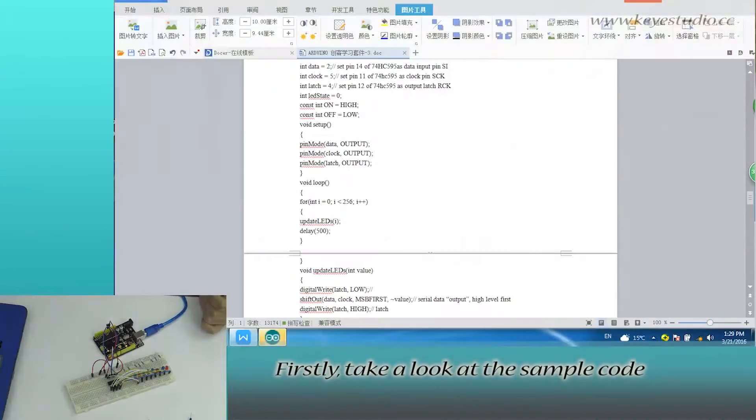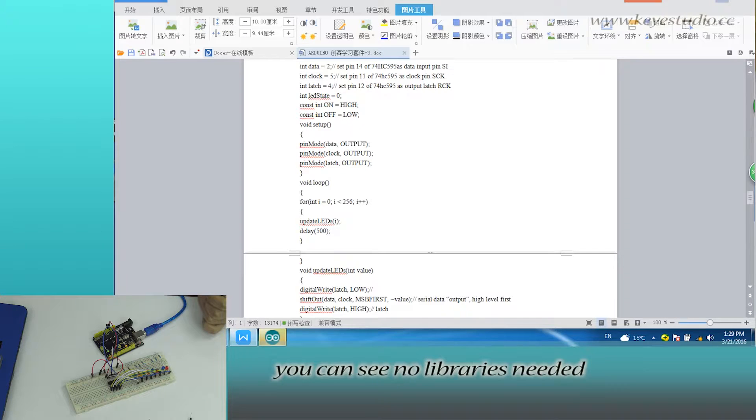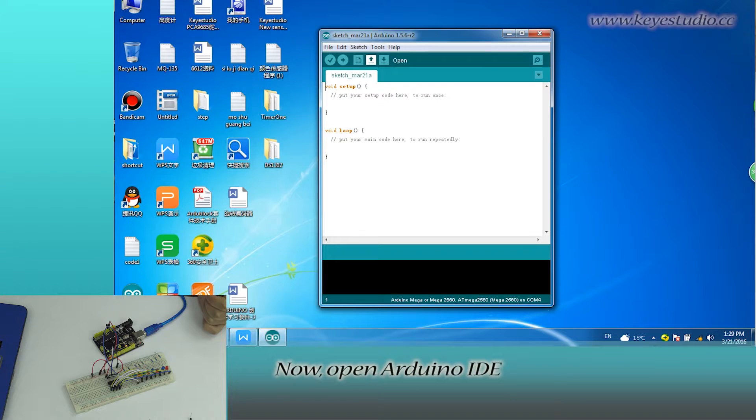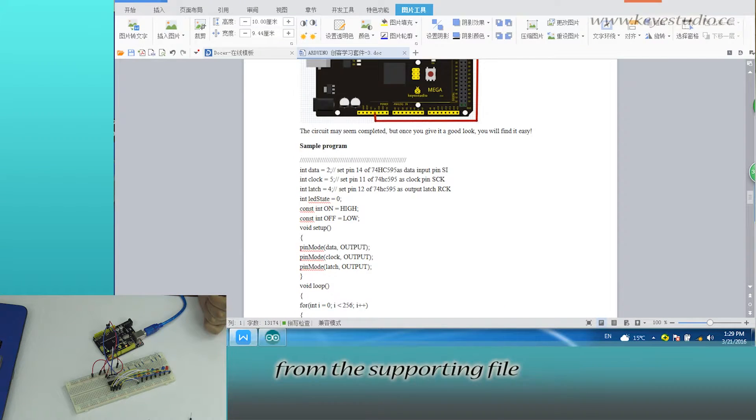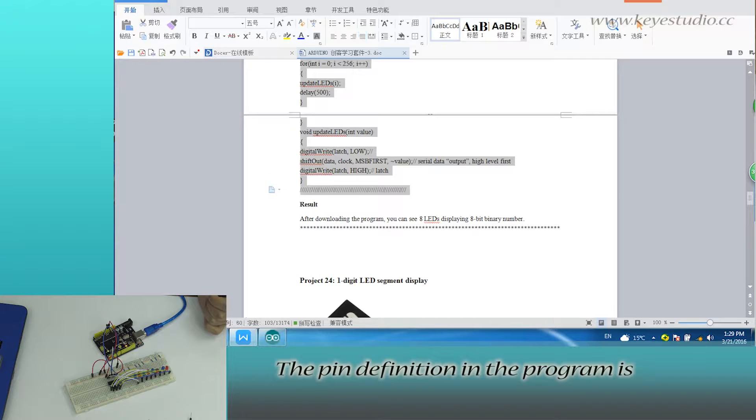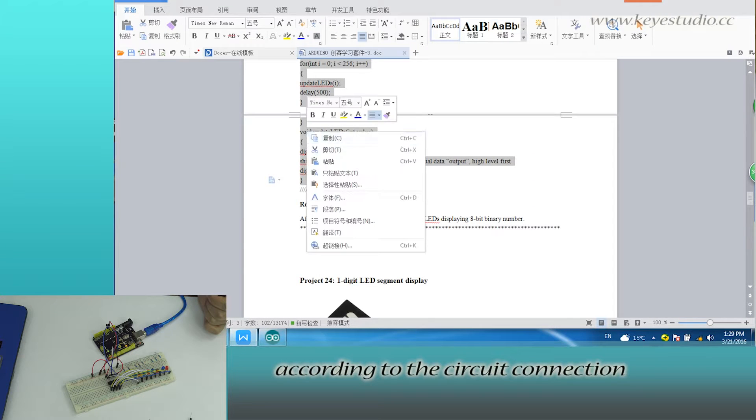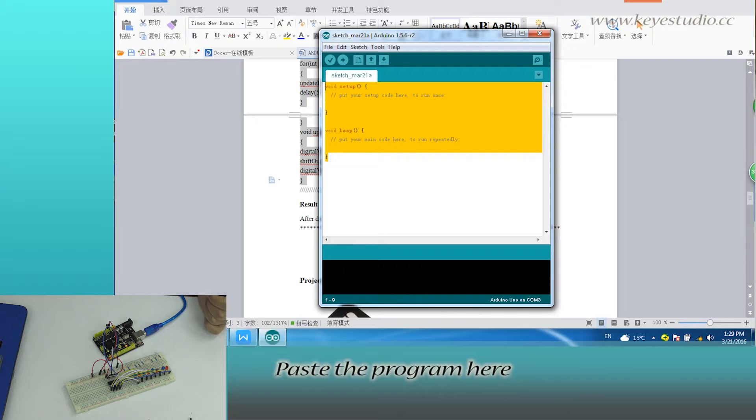First, take a look at the sample code. You can see no libraries needed. Now, open Arduino IDE. Select the board and COM port. Then, directly copy the program from the supporting file. The pin definition in the program is according to the circuit connection. Paste the program here.